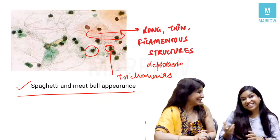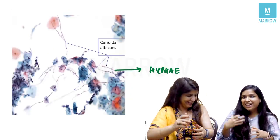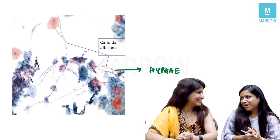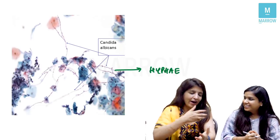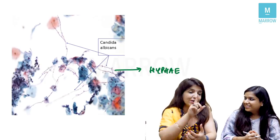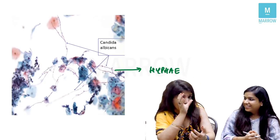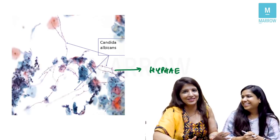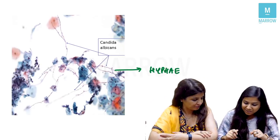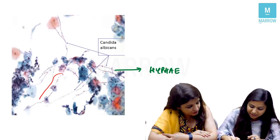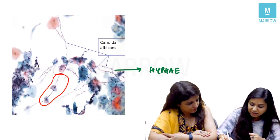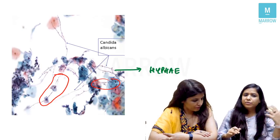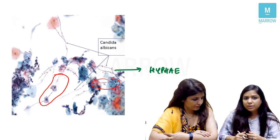Pathologists use food-based mnemonics to make things interesting and memorable. In candida infection on PAP smear, you see hyphae and candida spores. A tip: if the organism is smaller than the surrounding epithelial cells, it is Trichomonas. In candidiasis, the candida spores are smaller than the nuclei of epithelial cells. The pseudo-hyphae in candidiasis can be arranged in a 'shish kebab' appearance — another food-based mnemonic.